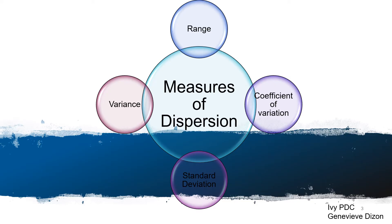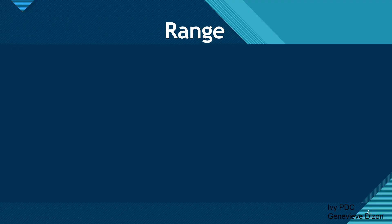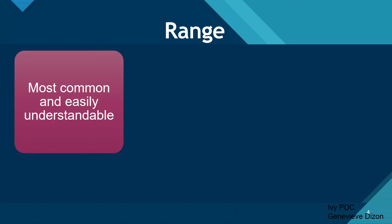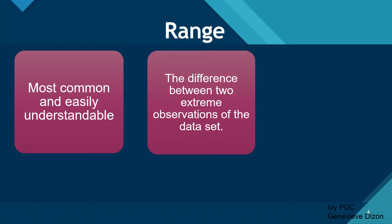The different measures of dispersion are range, coefficient of variation, standard deviation, and variance. We will discuss these one by one. Range is the most common type of measure of dispersion. This is easily understandable because it is the simplest form of measurement of dispersion. It may simply be computed by the difference between the two extreme observations of the set — the lowest and the highest value.